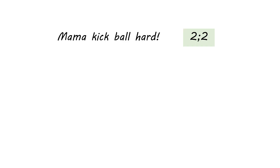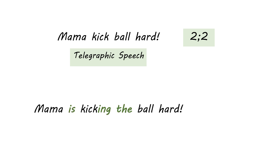It's been a while, but a while ago we had a lesson where we talked about children's really early syntactic development. We talked about how children who are about two years old can sometimes put together multi-word sentences, but that these sentences are telegraphic speech. So sentences like 'mama kick ball hard' — they convey meaning, they have some syntactic rules going on, but they don't have all the stuff that you need for an adult-sounding sentence.